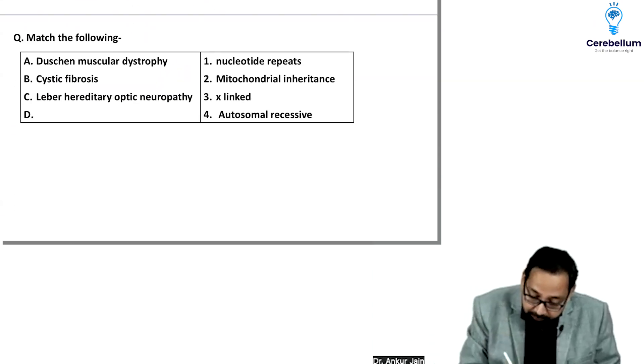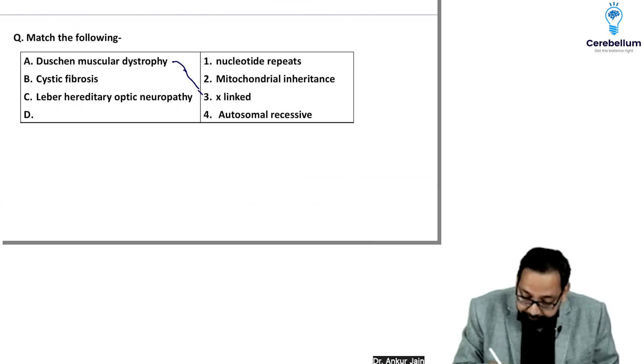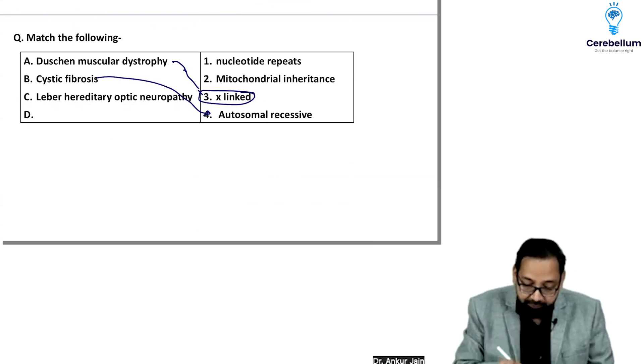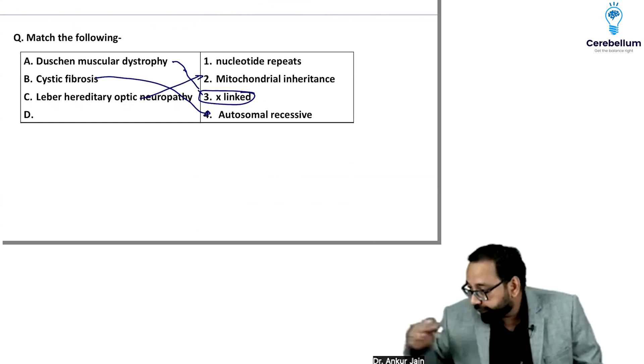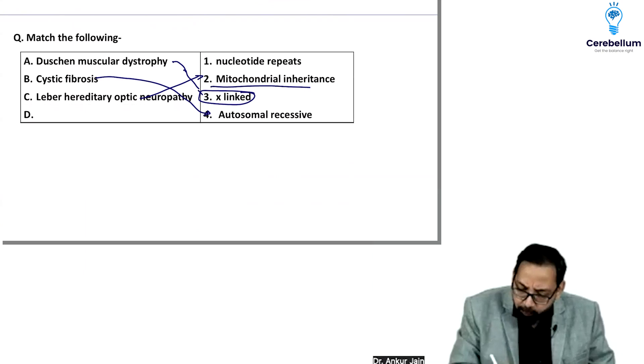Next question: X-linked. Cystic fibrosis is autosomal recessive. Leber's hereditary optic neuropathy is mitochondrial inheritance.